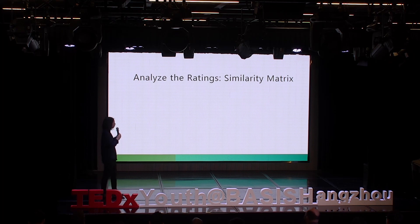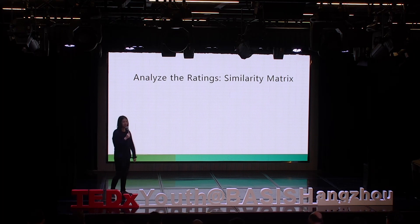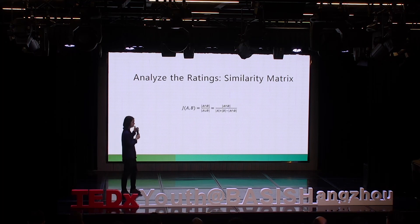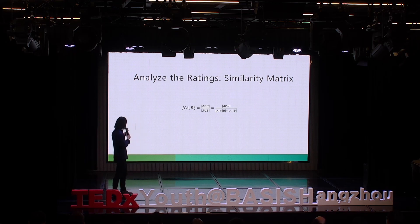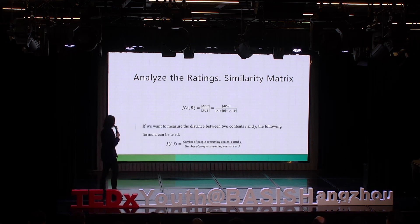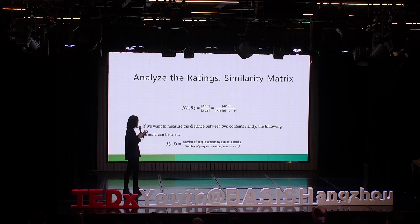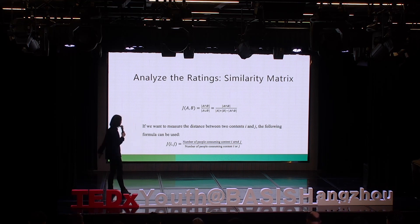We now move on to the step of analyzing the ratings we have just obtained. Here we can see a formula, and it seems very simple. Basically, it is the number of users consuming both content i and j, divided by the number of people consuming content i or j.